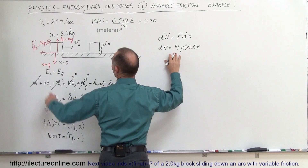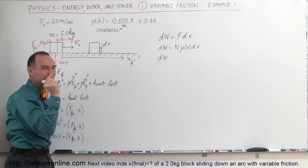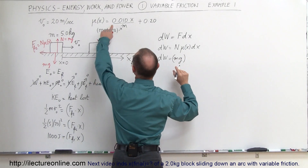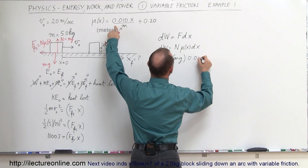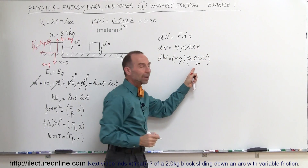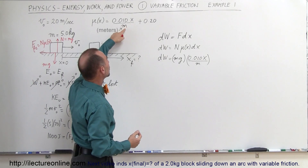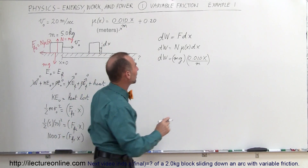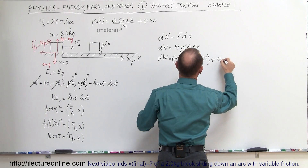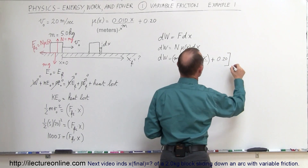The normal force is m times g, so the small amount of work done to move the block an infinitesimal distance is dw equals mg times mu. Now mu is going to be equal to 0.010 times x — divided by meters, since x will be in meters and mu is unitless, we include the division by meters to cancel units — plus 0.20 (the constant part of mu), all times dx.